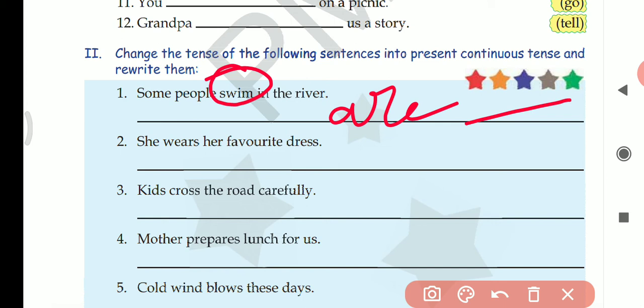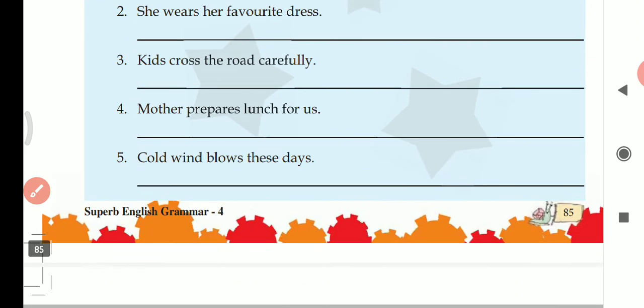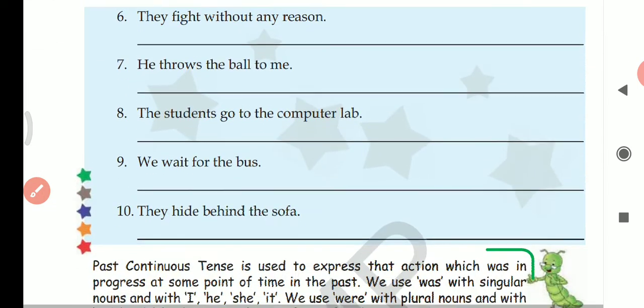Third: Kids cross the road carefully. Kids are plural, so kids are crossing the road carefully. Fourth: Mother prepares lunch for us. Mother is preparing lunch for us. So similarly this way you can solve this exercise. You just have to write the helping verb and add -ing to the verb.